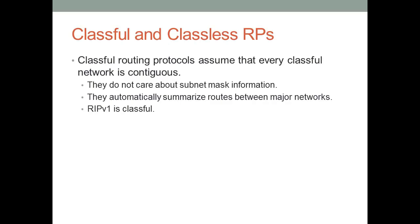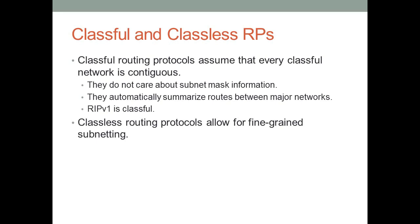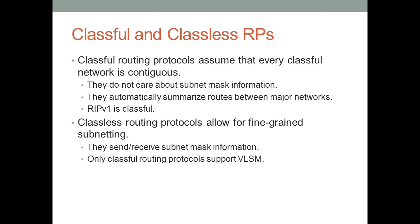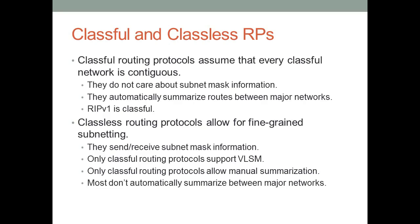Classful routing protocols can cause a lot of problems, so most protocols we discuss are classless. Classless routing protocols support fine-grained subnetting because they transmit subnet mask information and support VLSM. They also allow manual summarization, whereas with RIP version 1 we have to rely on classful boundaries. Most classless protocols will not automatically summarize between major networks — one exception is EIGRP in certain circumstances. RIP version 2, OSPF, and EIGRP are all classless routing protocols.